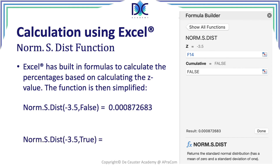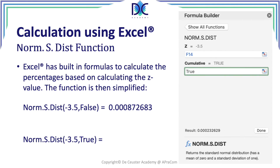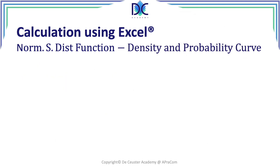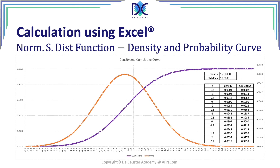We can do the same thing using NORM.S.DIST with the cumulative parameter set to true. We find the probability of numbers being to the left of −3.5 as a Z value, and we can perform all the calculations. We can also draw the curve as we did before — the table shows both the density and the cumulative function curves. That was it for this presentation.